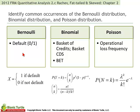The Bernoulli is perhaps the simplest of all, because it's just an on or an off — it's a toggle. A common application for the Bernoulli would be for the default of an obligor, credit, or bond. Does it default or does it not? On or off. Notice how the characterization of the Bernoulli could not be simpler.